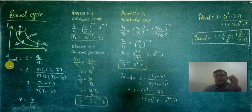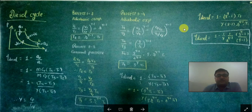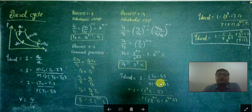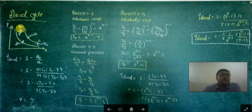Now let's find the efficiency. Efficiency is given by η = 1 − Q2/Q1, since work done equals Q1 − Q2, divided by Q1. Here Q2 is given by m·cv·(T4 − T1), because process 4-to-1 is a constant volume process, and Q1 is given by m·cp·(T3 − T2).